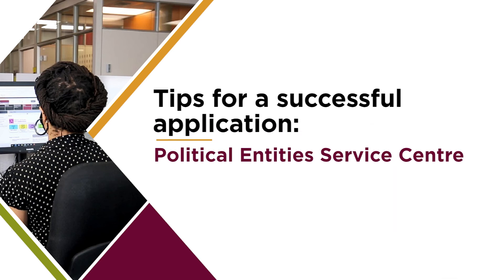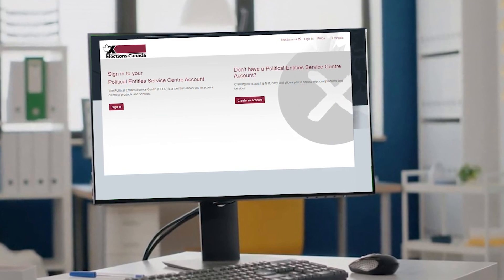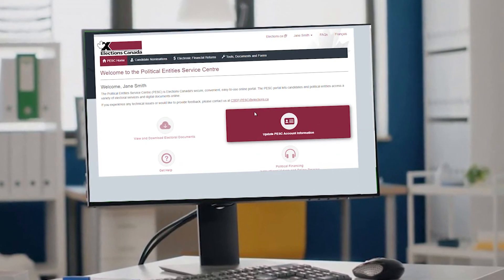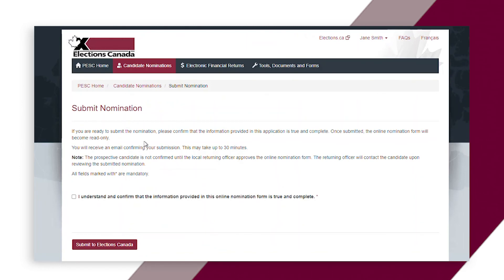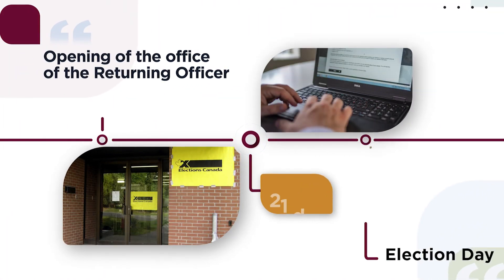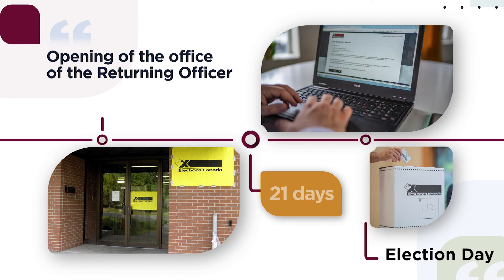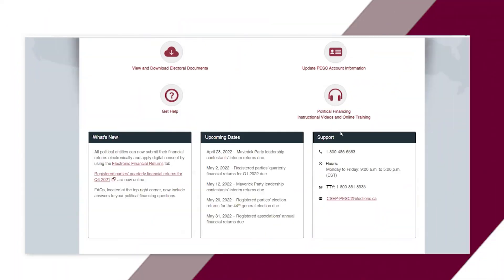Submit your nomination as soon as possible once an election is called. The sooner you submit your nomination to the returning officer, the more time you will have to make any corrections that may be required. You can submit your nomination anytime between the opening of the office of the returning officer and the Monday that lands 21 days before Election Day. If you are still having trouble creating or submitting an electronic nomination in PESC, please do not hesitate to contact the Political Entities Support Network using the contact information provided in the video description.